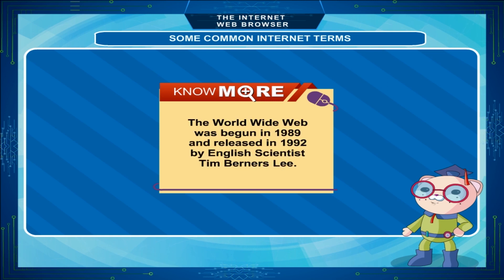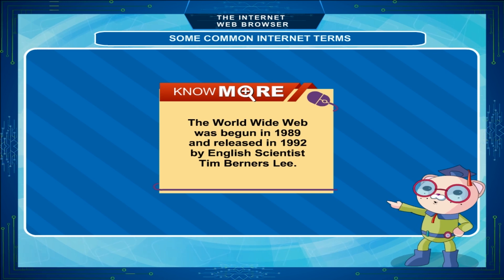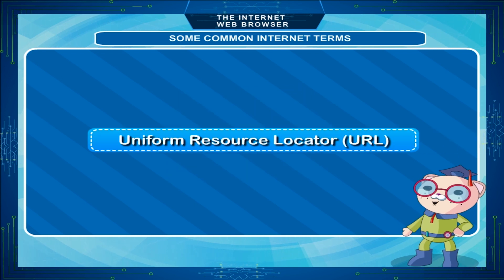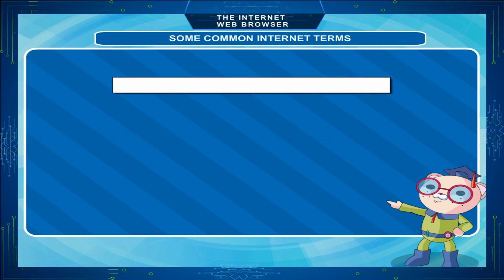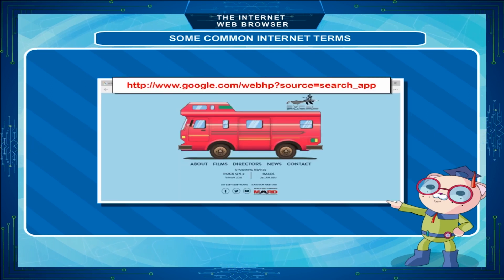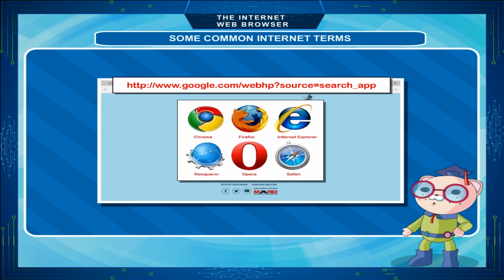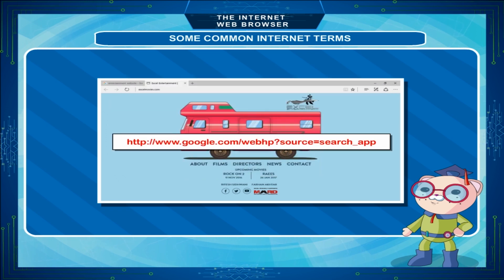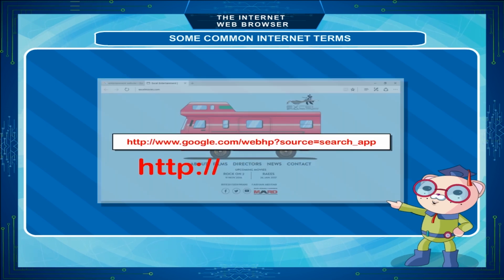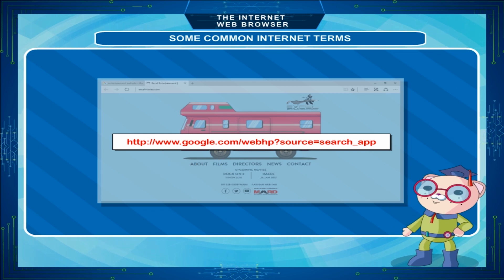The World Wide Web was begun in 1989 and released in 1992 by English scientist Tim Berners-Lee. Uniform Resource Locator or URL: The Uniform Resource Locator (URL) is the address of a website. URLs for web pages begin with the code HTTP://, where HTTP stands for Hypertext Transfer Protocol.